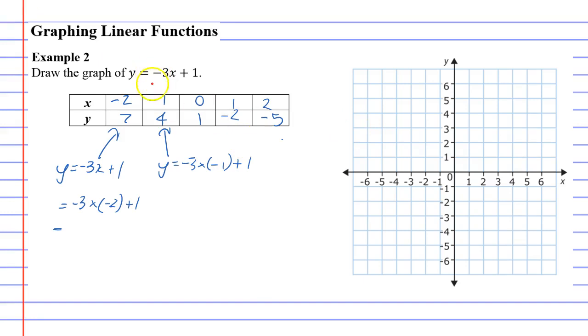In this column, when x is negative 2, y is 7. So negative 2, 7. We don't have a 7, so we just go 1 box above the 6.